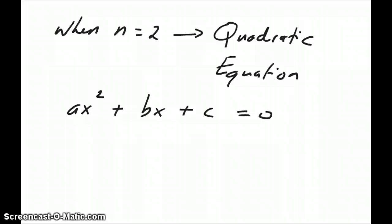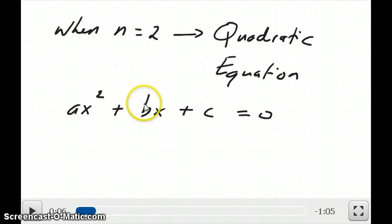Now, as some of you might know, when n is equal to 2, then the equation is called a quadratic equation and it has the following form, ax squared plus bx plus c equals to zero.